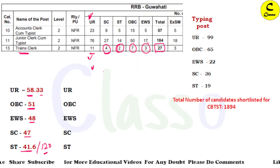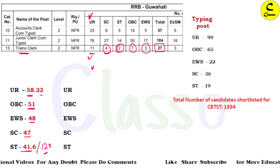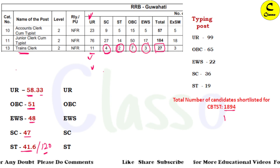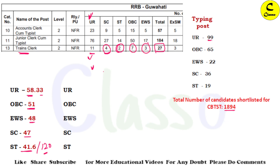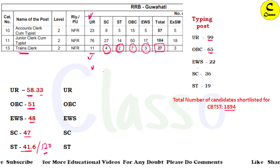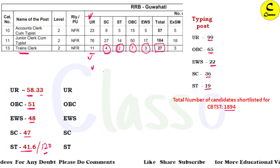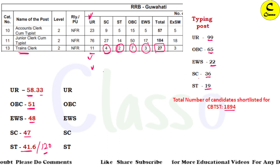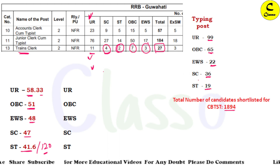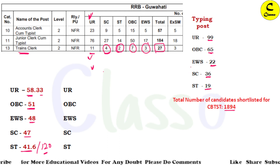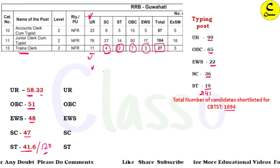Let's talk about the expected cut-off in Guwahati zone. For the typing post, the total number called was 1894 people. The total typing posts are: UR is 99, OBC is 65, EWS is 22, SC is 36, and ST is 19. The total post count is 241.